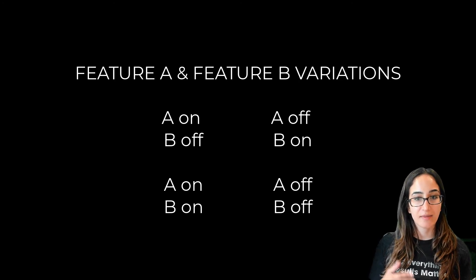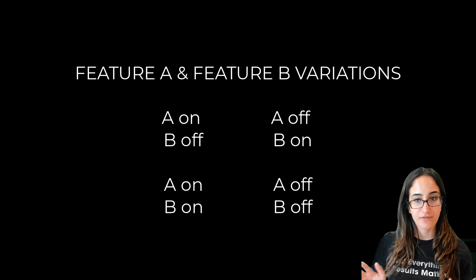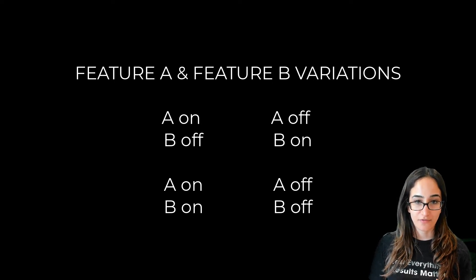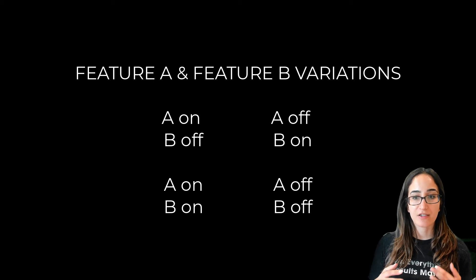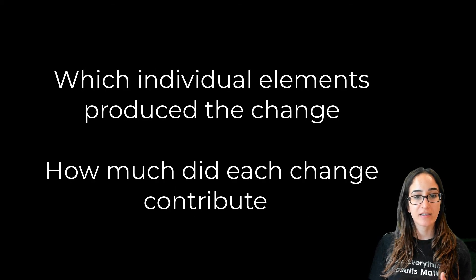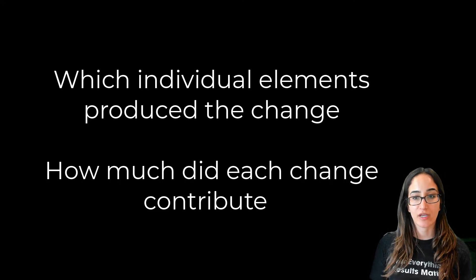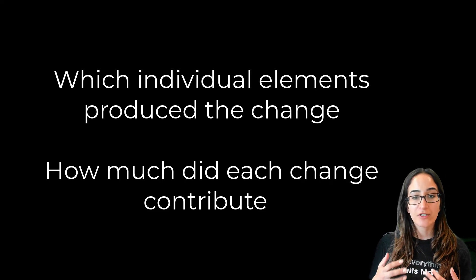Those four combinations are: A on, B off; A off, B on; A on, B on; and A off, B off. Segmenting your user base into these four parts lets you know which individual elements produced the change and further, how much each one contributed.